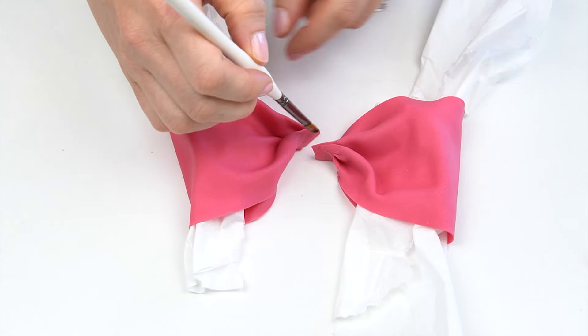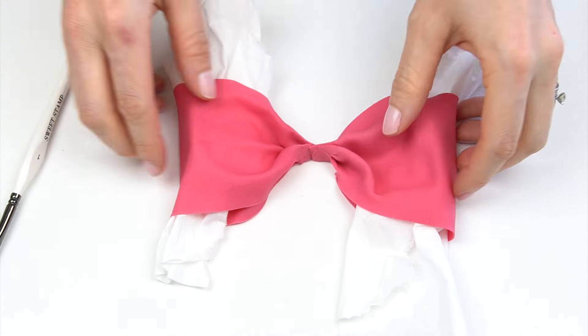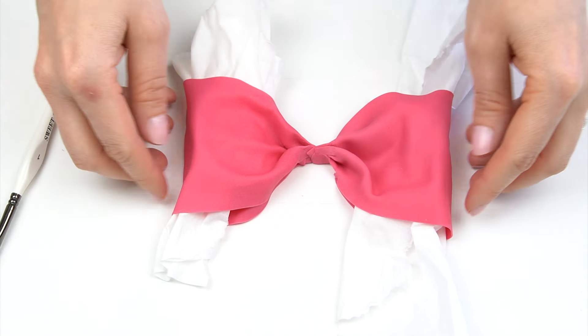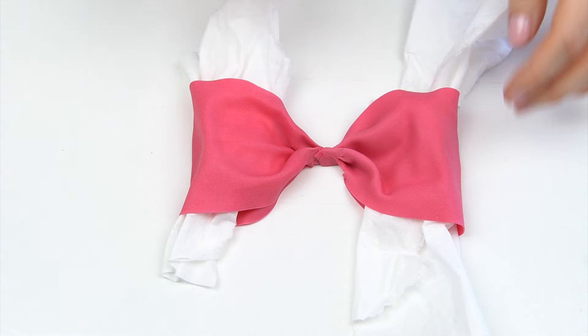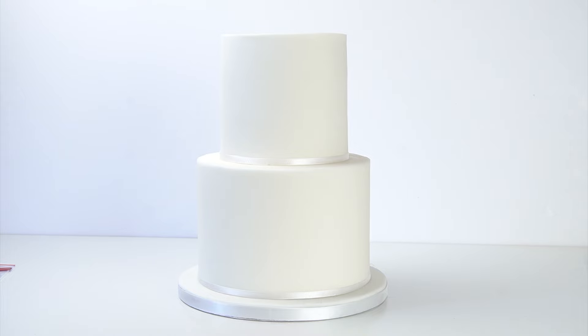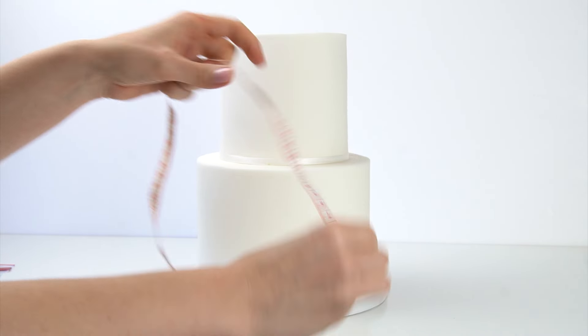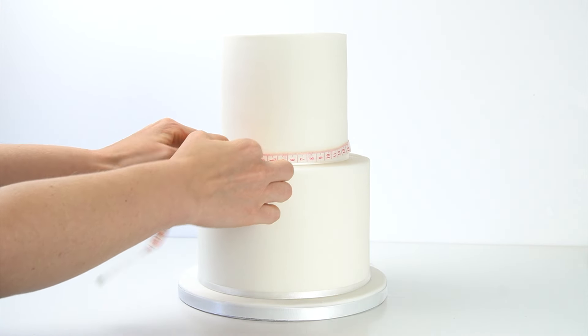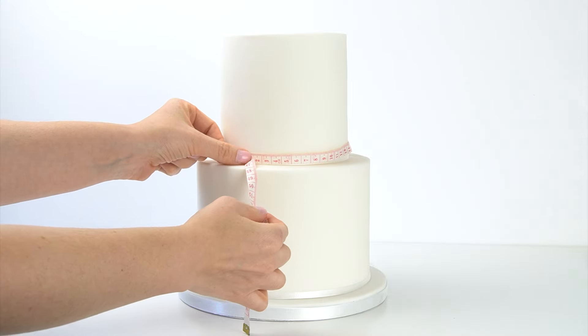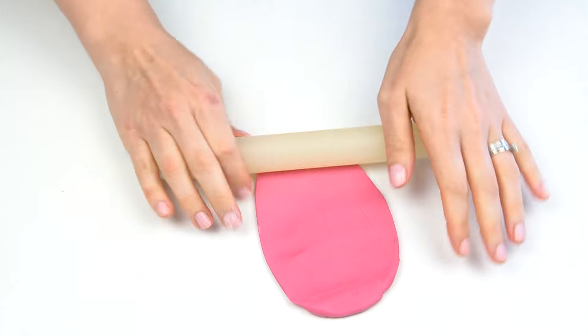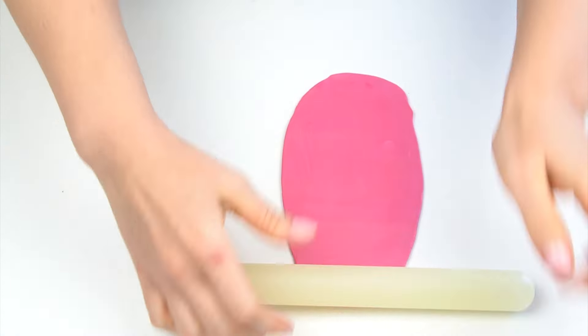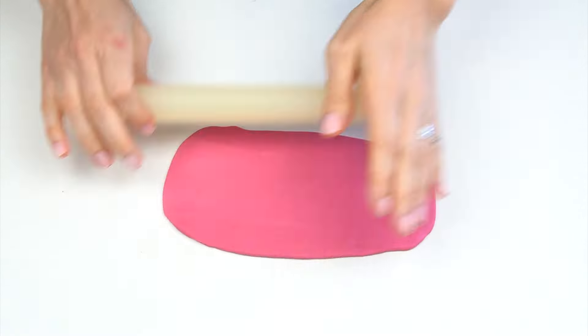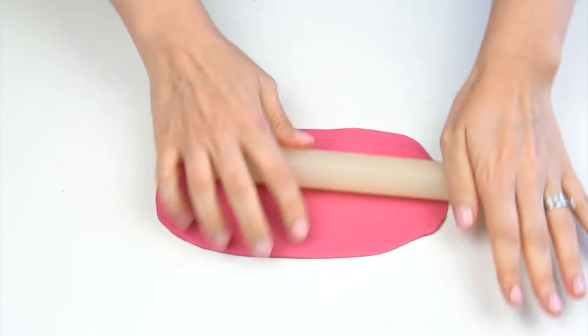I'm gonna leave this part of my bow for a few hours just to firm up slightly, so that when we start to add it onto our cake it's gonna hold its shape. Whilst that's drying I'm gonna work on the piece of ribbon that will wrap around my cake. I'm gonna take a small little tape measure (or you can use a ruler or a piece of string) and I'm just gonna measure around my top tier. It's around 44 centimeters. For that larger strip I'm taking around 70 grams of my gum paste and I'm gonna start to roll that out.